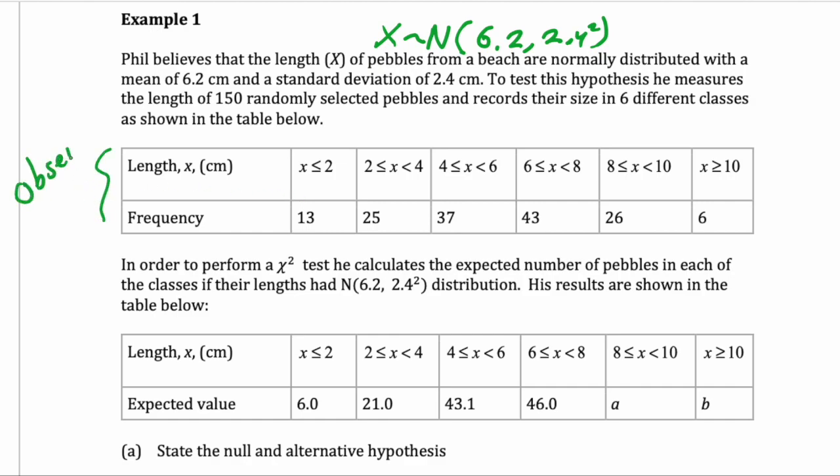what he actually recorded, and here are the expected frequencies. So these are what we expect if we have a normal distribution like this. These are simply getting the probabilities and multiplying by the number in the sample, which is 150.